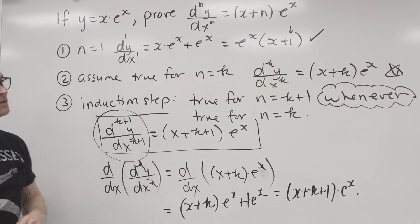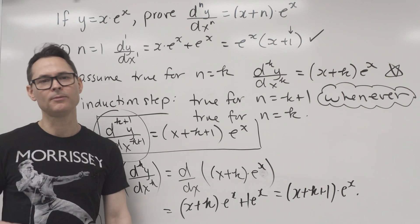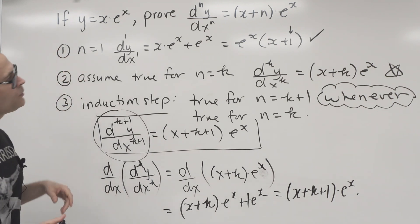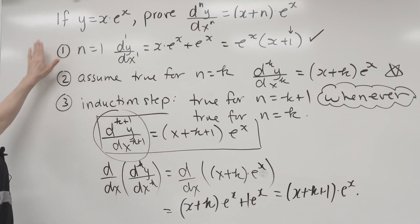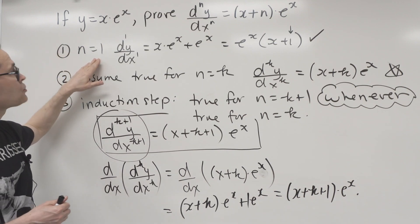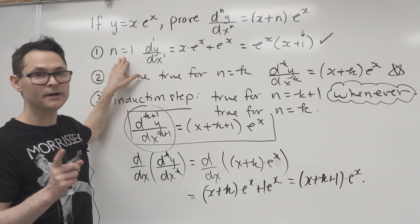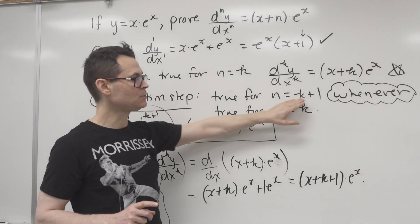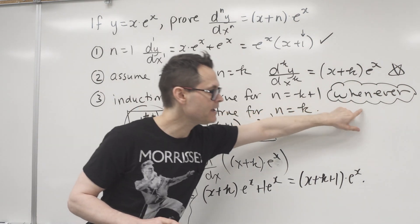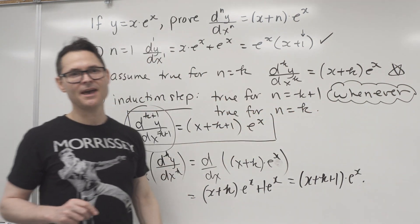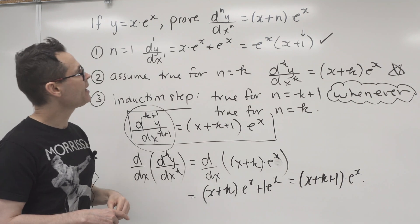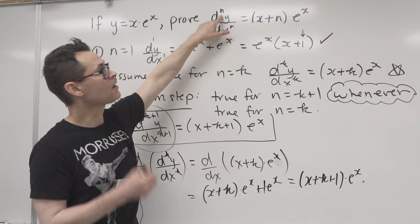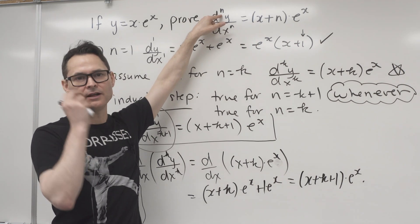And so we sort of summarize. Your teacher will probably require you to make a nice final statement. And the statement would read something like this. Since we showed that it's true, the statement is true for n is equal to 1. And we also showed that it's true for n is equal to k plus 1 whenever it's true for n is equal to k. Then by using induction, we've proven the statement to be true for all values of n, all appropriate values of n.